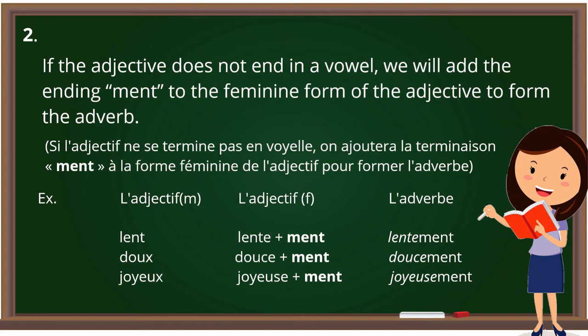Rule number two: if the adjective does not end in a vowel, we add the ending -ment to the feminine form of the adjective. For example, 'long' — its feminine form is 'longue,' and we add -ment to make 'longuement.' Next, 'doux' — its feminine form is 'douce,' and adding -ment gives 'doucement.' Then 'joyeux' — its feminine form is 'joyeuse,' and adding -ment gives 'joyeusement.'